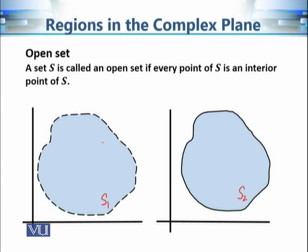For example, in the case of S1, let's choose a point P1. A point is interior if there exists an epsilon neighborhood of that point which is contained in the set. In this case, we can easily see that there exists an epsilon neighborhood of P1 which is contained in S1. Similarly, we can choose a point very close to the boundary and still find a very tiny epsilon neighborhood contained in S1.